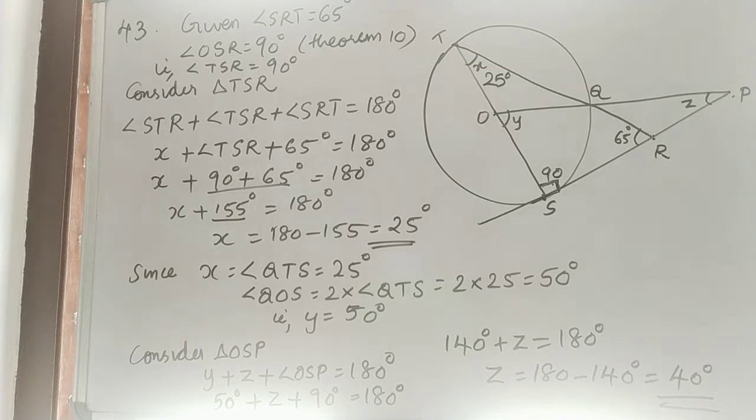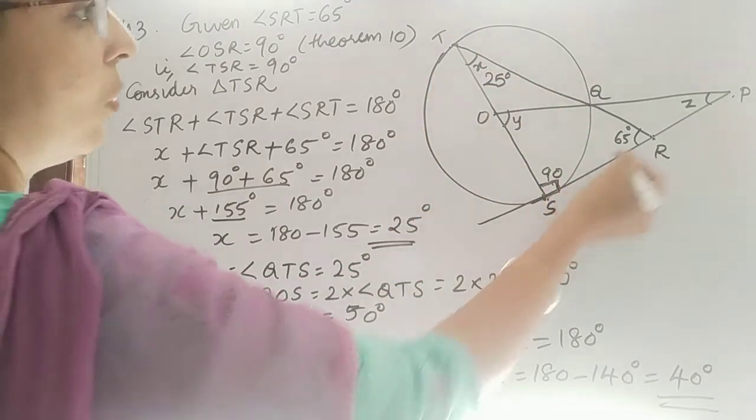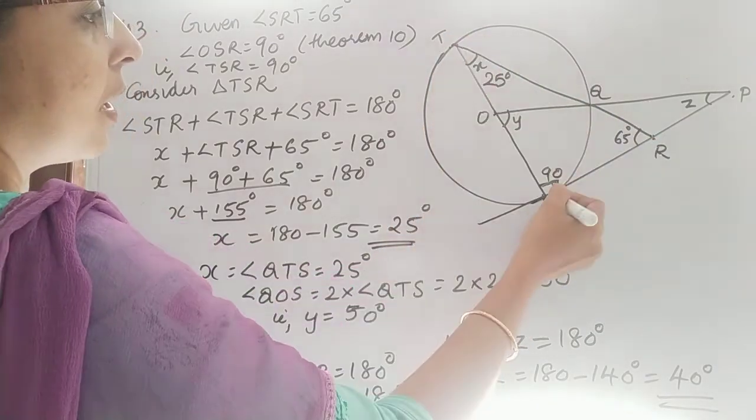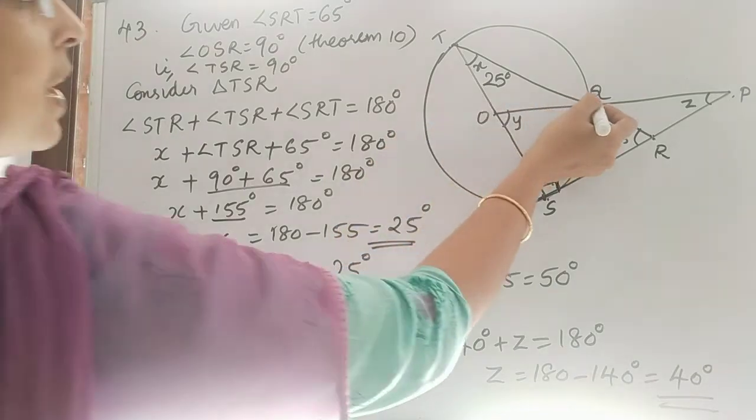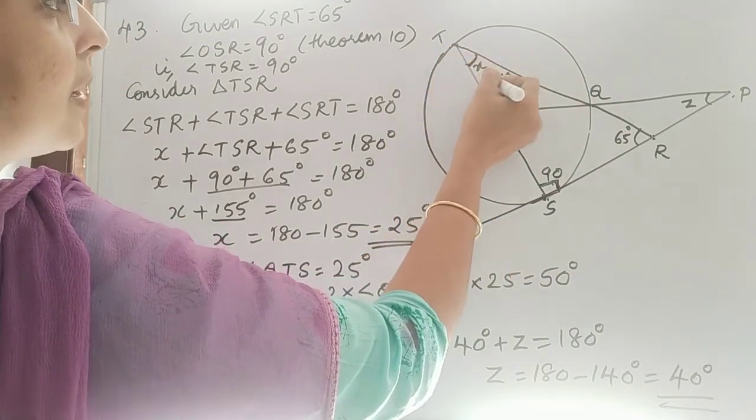X is angle QTS, or we can say angle RTS. So angle QTS is X, that is 25 degrees.